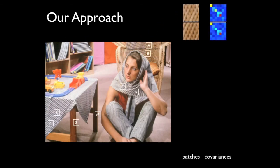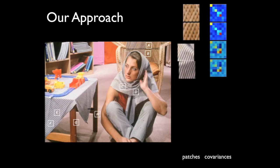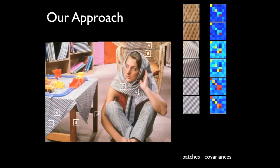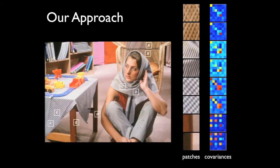Covariance matrices of visual features capture local image geometry remarkably well. As you can see, the regions having similar visual characteristics, like similar textures or local structures, have similar covariance matrices.